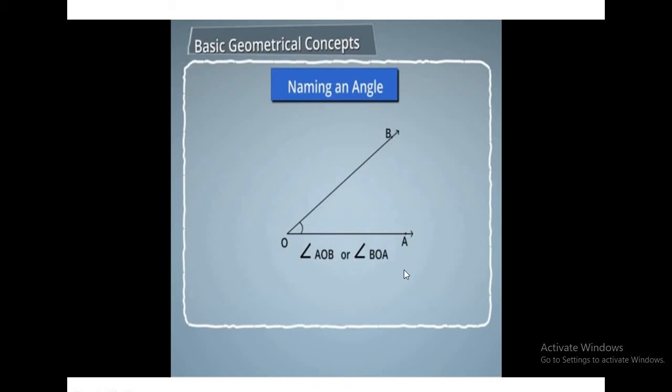O is the vertex, so it remains always in the centre. Whatever vertex you are having as the common end point, it should be in the centre when you write the name of any angle.